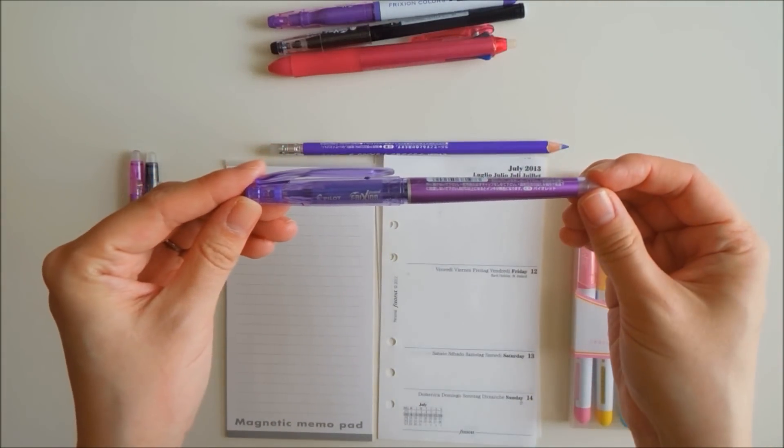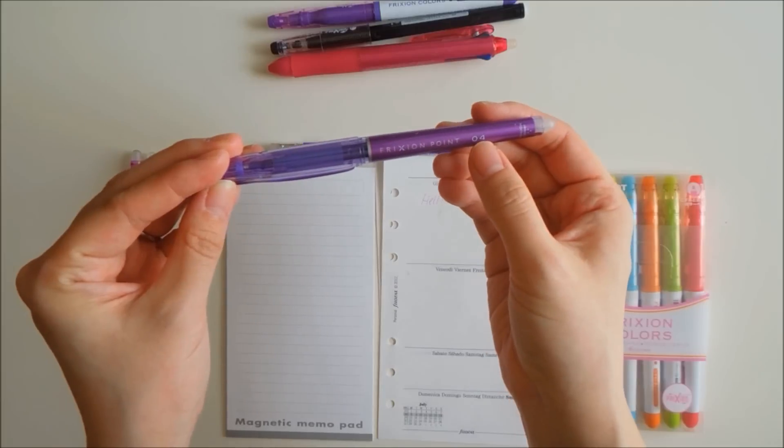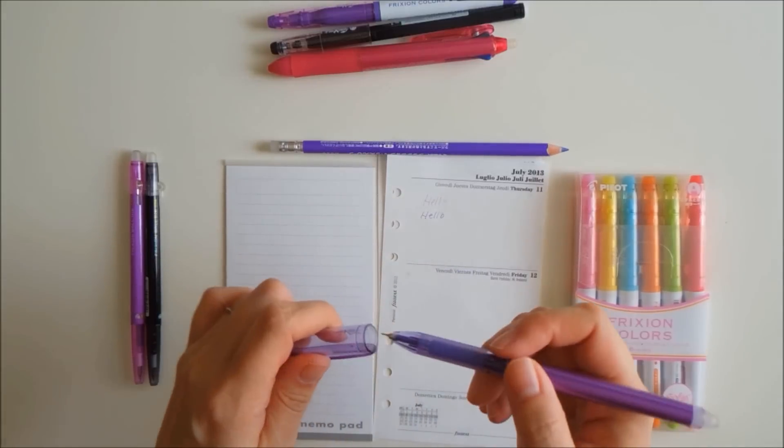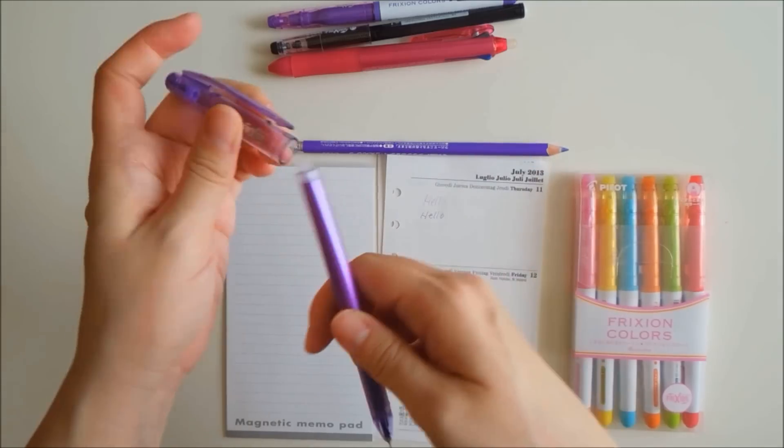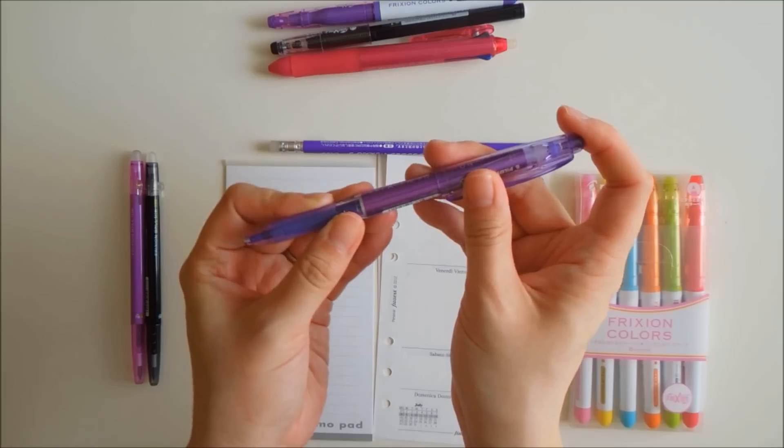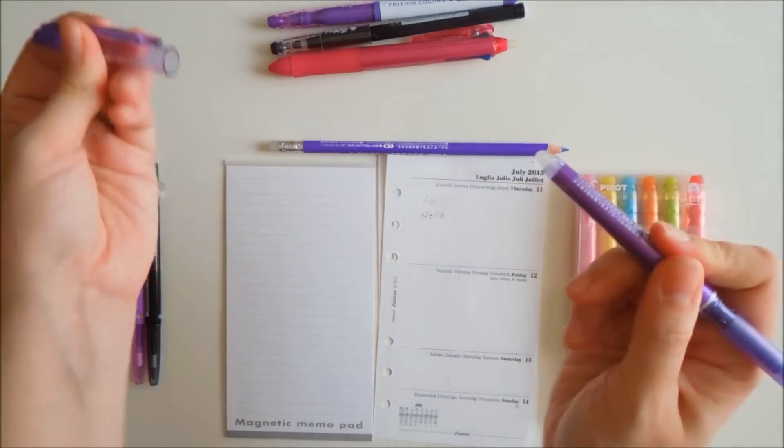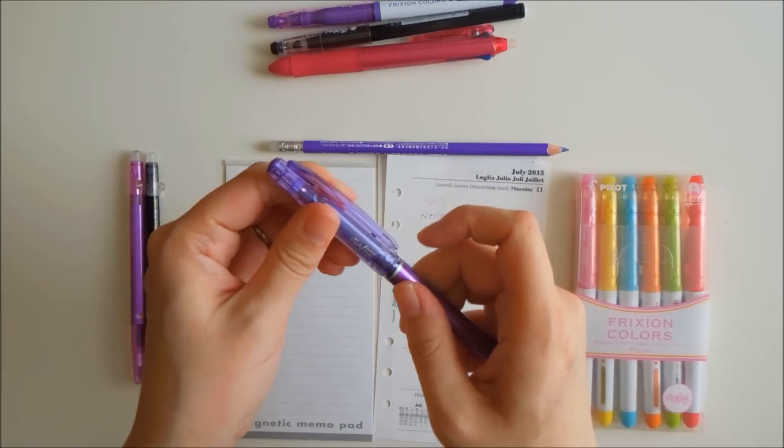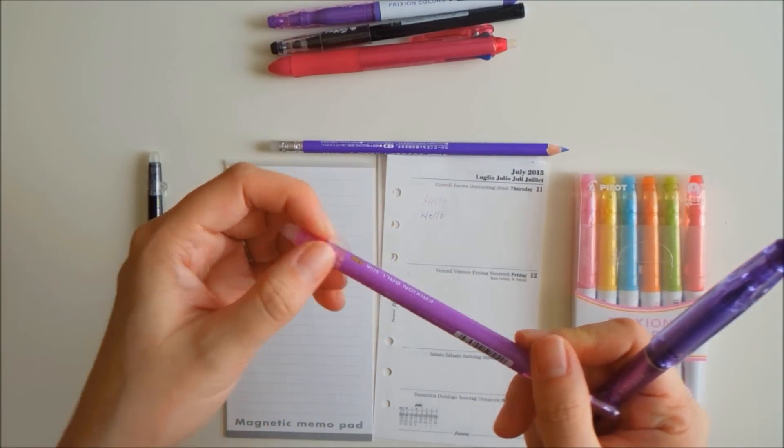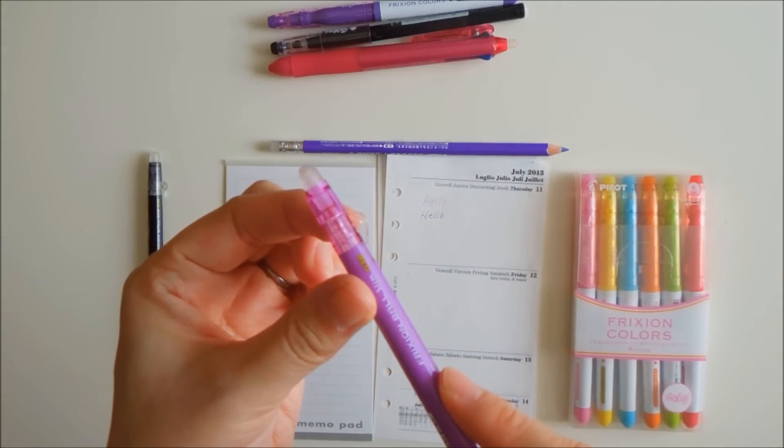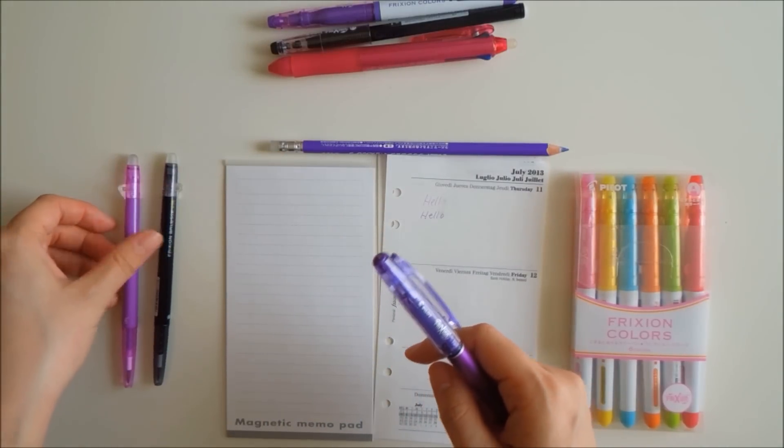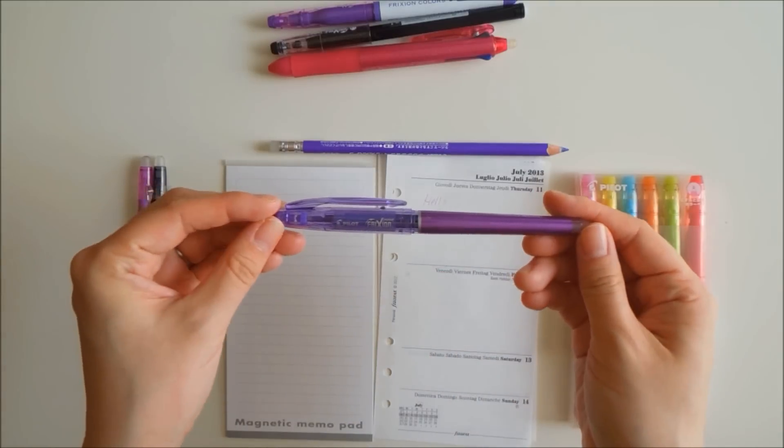There's this other one here, it's called Frixion Point, and it's 0.4 tip. As you can see, it's a little bit thicker than the 0.38. This one does have a cap though, so the downside is that if you lose it, then the ink could dry out, and then if you need to erase, you have to take off the cap and erase. It does have a little clip here, whereas these ones don't have the clip.